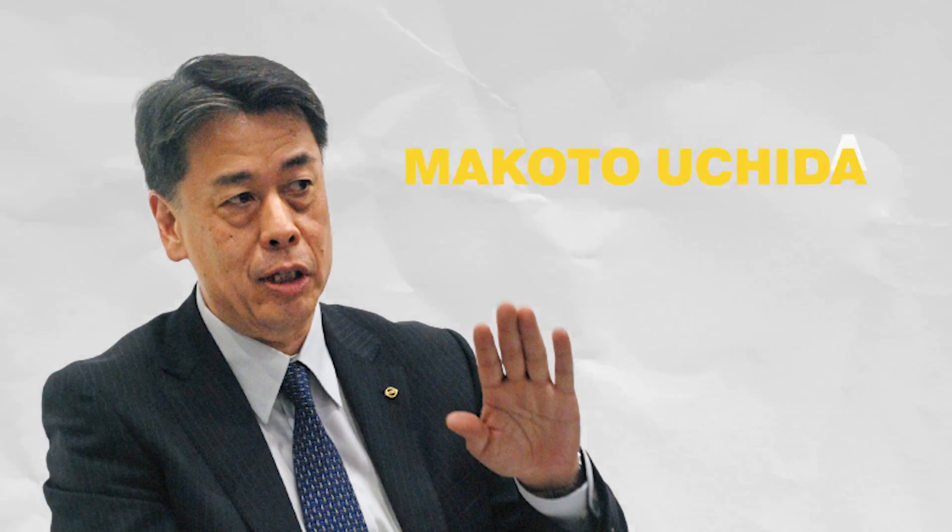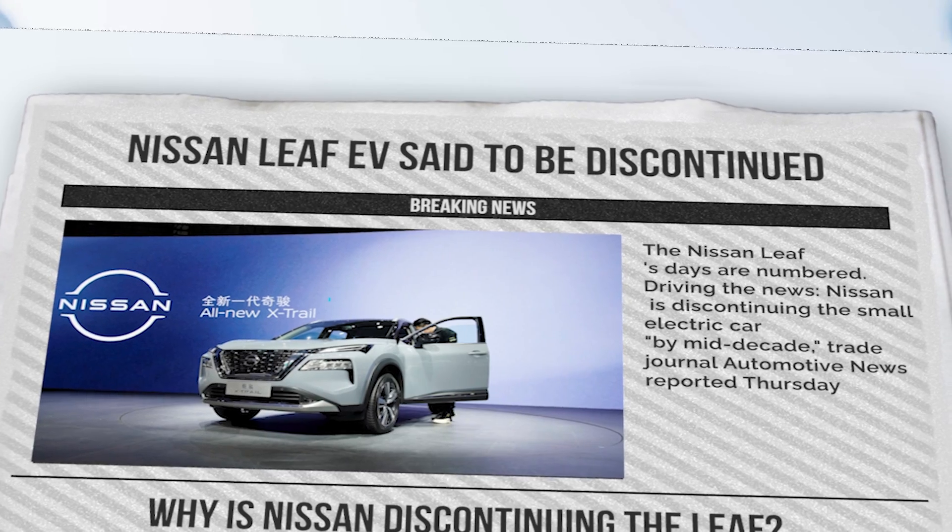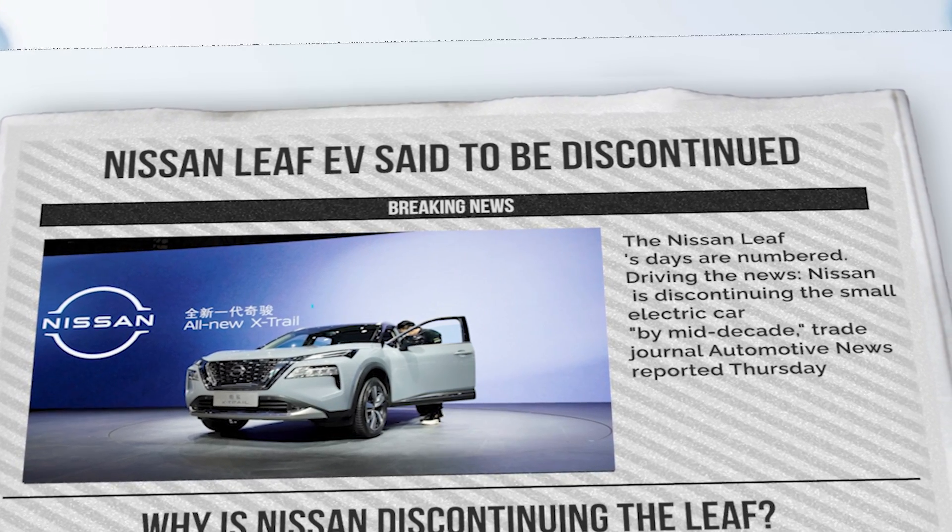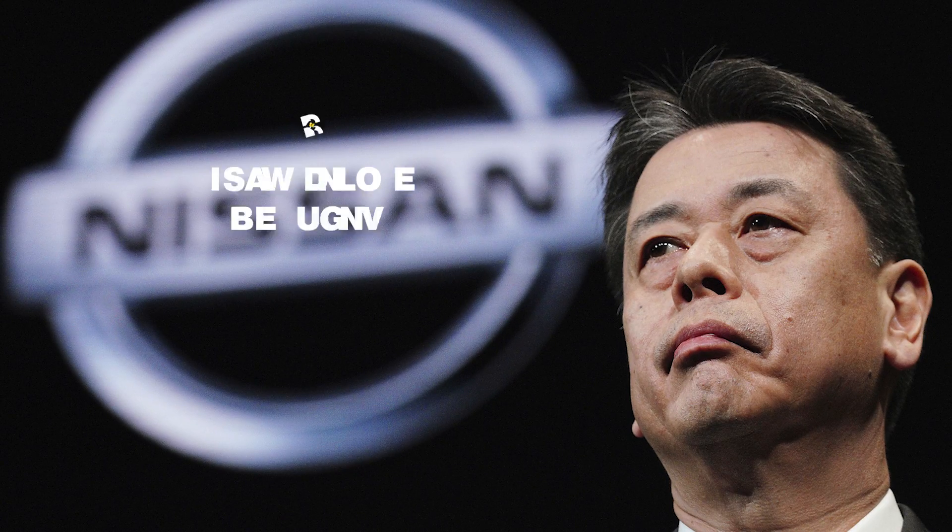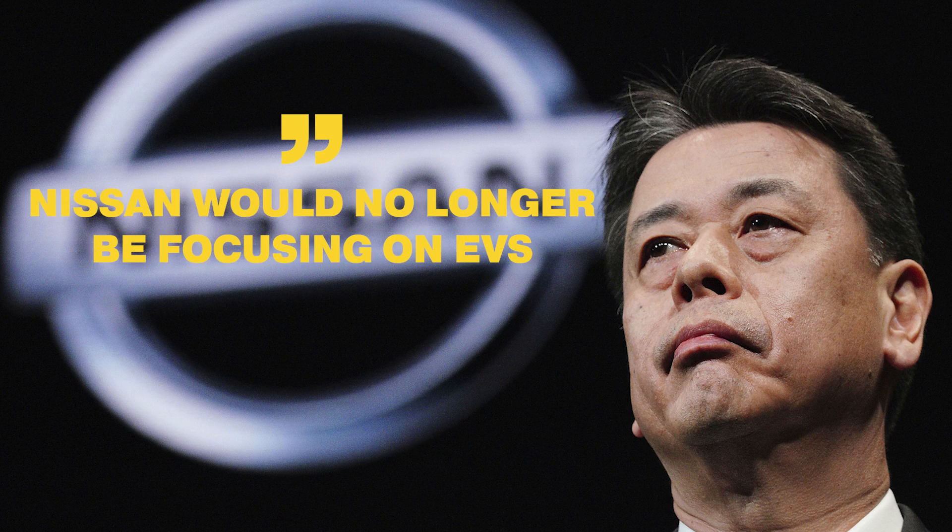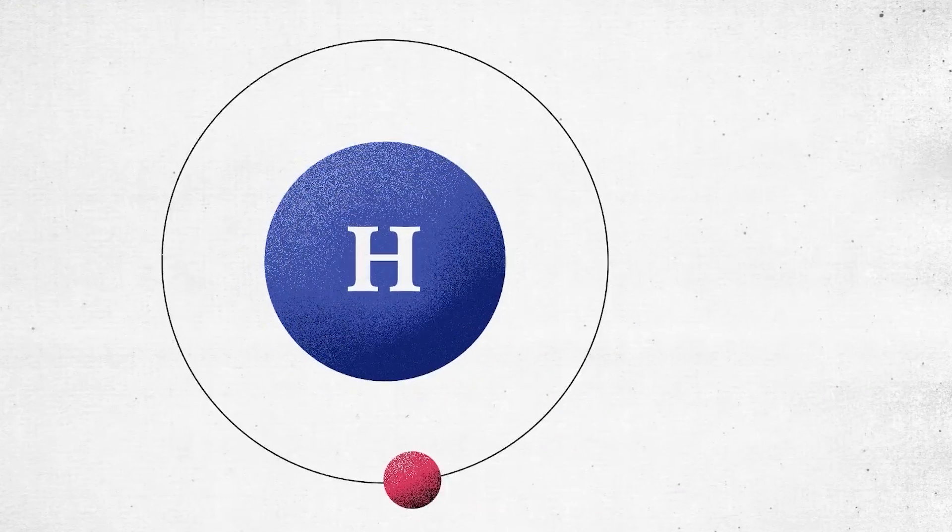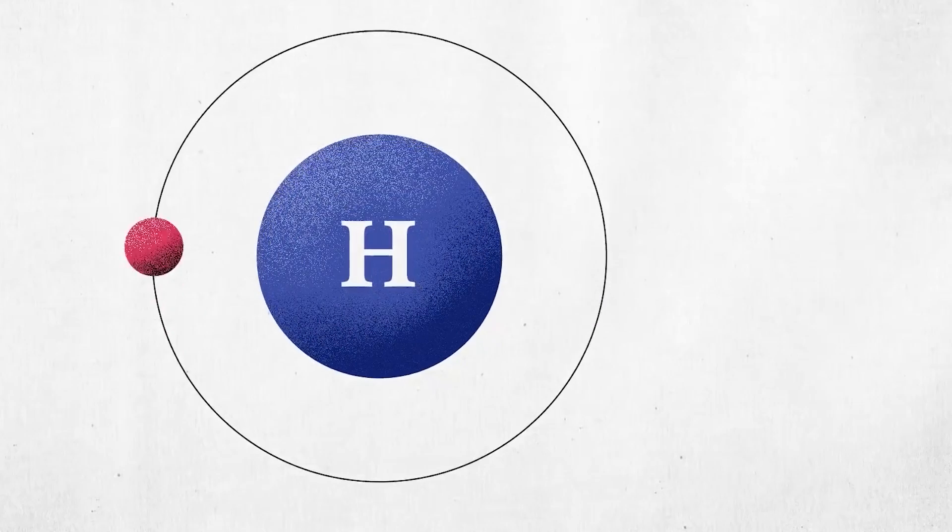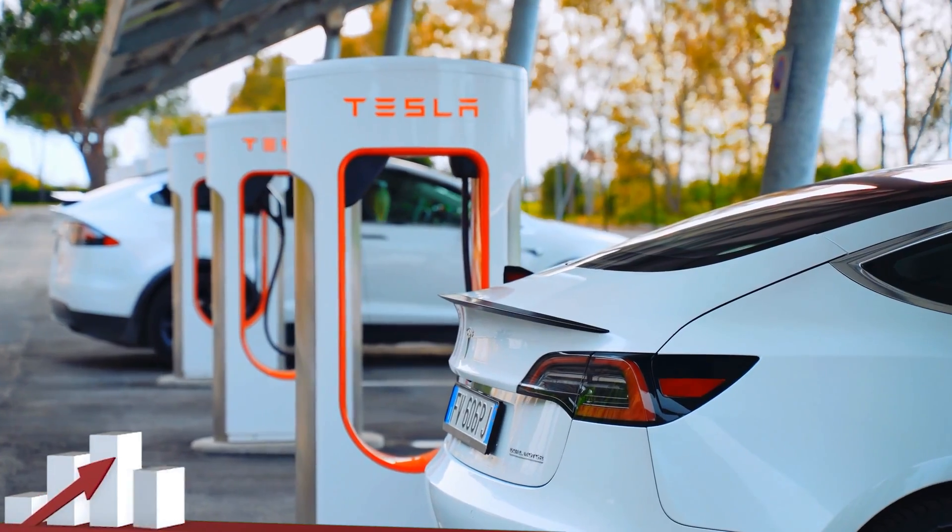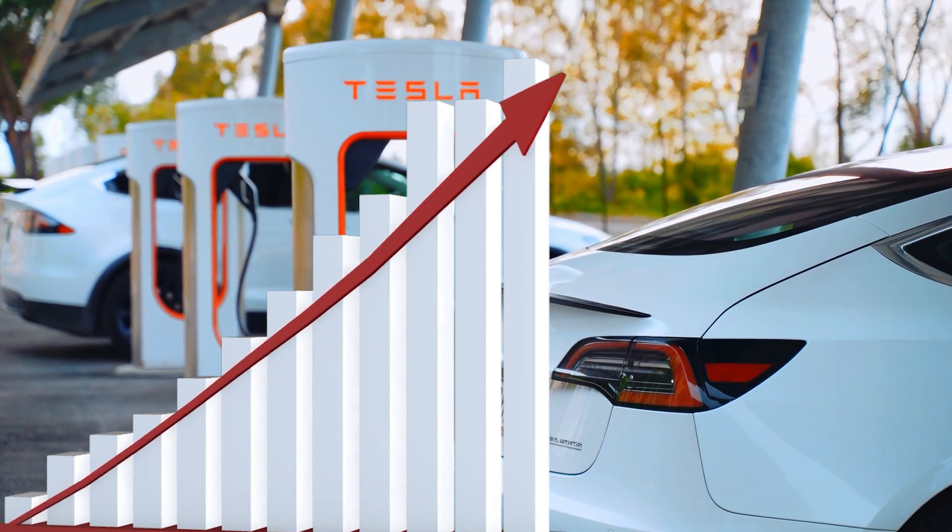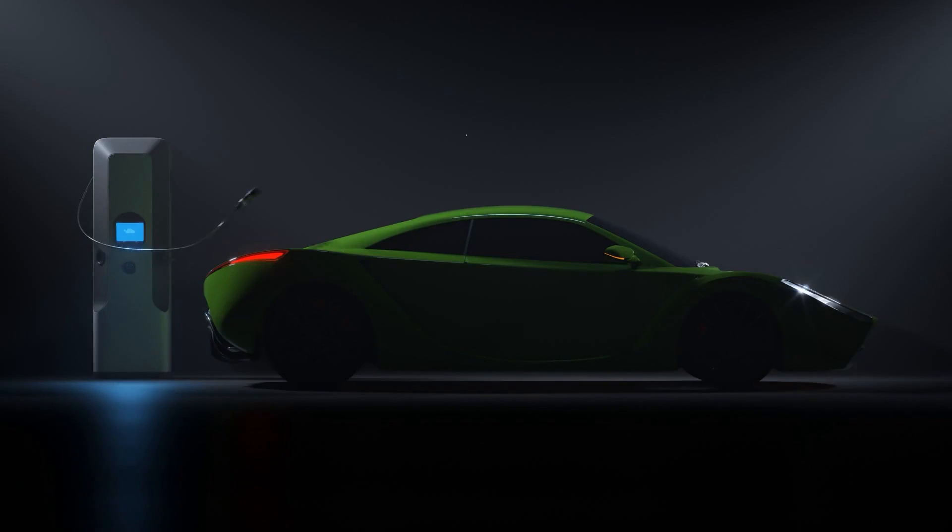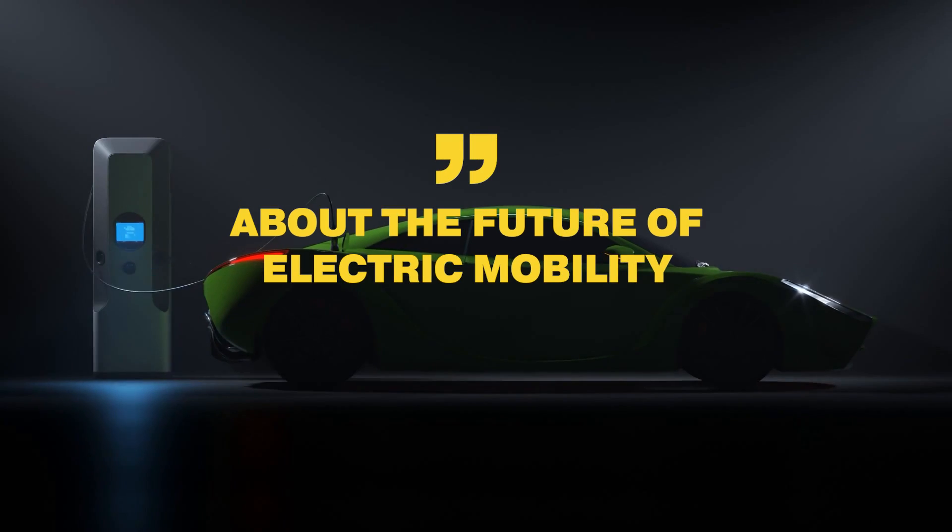Nissan CEO Makoto Uchida recently revealed a significant shift in the company's future strategy regarding electric vehicles. Uchida declared that Nissan would no longer be focusing on EVs and instead would prioritize a transition towards hydrogen fuel cell technology. This decision marks a departure from the prevalent trend of EVs dominating the automotive industry and raises questions about the future of electric mobility.